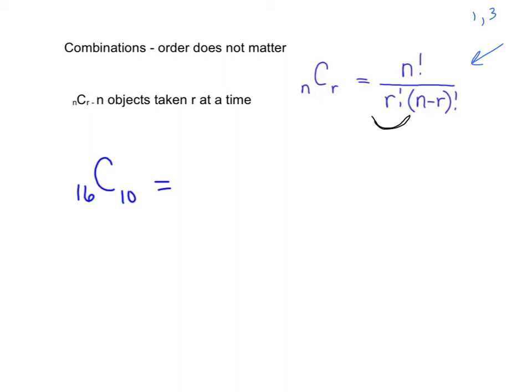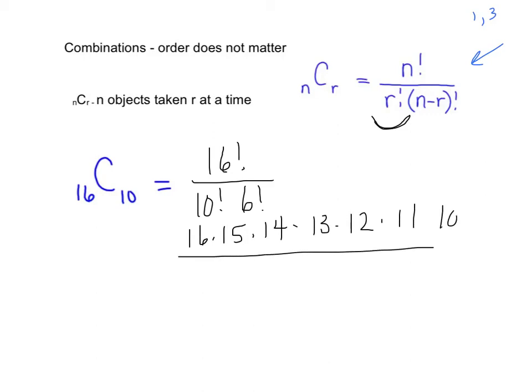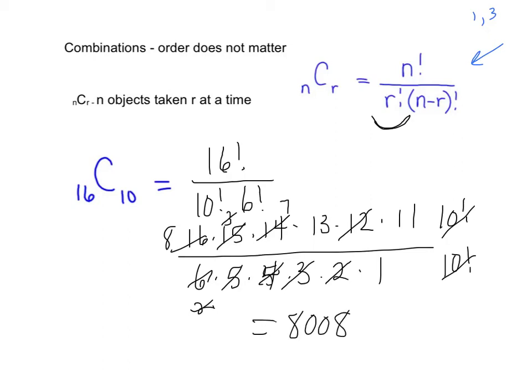So for instance, if I want to find sixteen objects taken ten at a time where order doesn't matter, then I would have sixteen factorial over R, which is ten factorial, and then sixteen minus ten, which is six factorial. So I would have sixteen, fifteen, fourteen, thirteen, twelve, and eleven, and I'm going to stop because that would cancel with the ten factorial in the bottom. And then I have six factorial. So six times five times four times three times two times one. And so I like combinations. I'm going to do four and three is twelve. I don't need ten, but this will go in here three times. This will go in here seven times. And then this will go in here two times. And this will go in here eight times. When you get done with all of that, you're going to get eight thousand and eight.